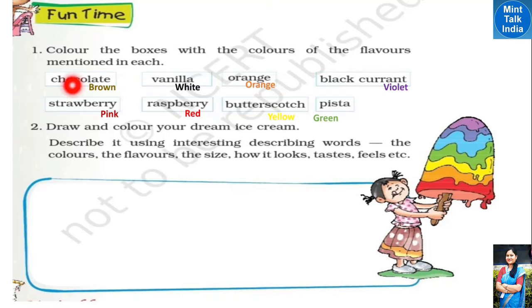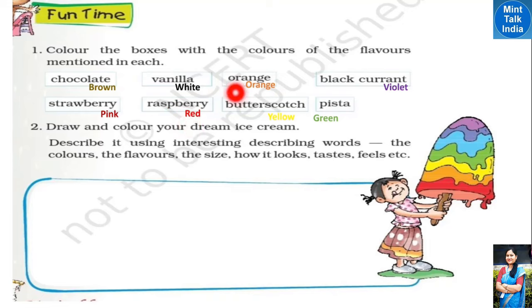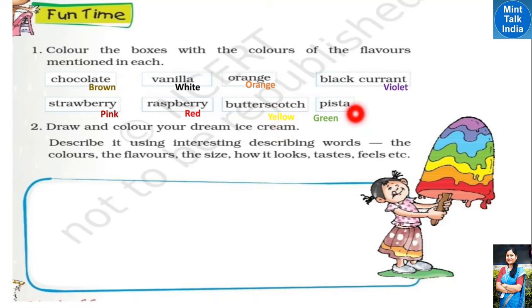Next is the Fun Time activity. You have to color the boxes with the color of the flavor mentioned in each box. Chocolate ice cream is brown, strawberry ice cream is pink, vanilla ice cream is white, raspberry is red, orange is orange, butterscotch is yellow, black currant is violet, and pista ice cream is green.